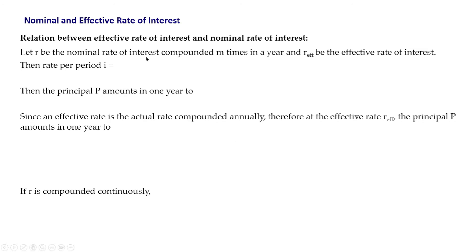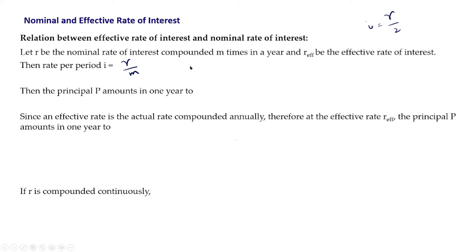Now we will see the relation between effective rate of interest and nominal rate of interest. Let R be the nominal rate of interest compounded m times in a year, and let R_effective be the effective rate of interest. The rate per period I is given by R divided by m. For example, if R is compounded semi-annually then I equals R by 2, and if compounded monthly then I equals R by 12.